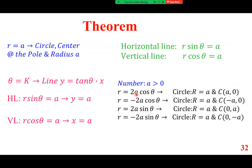If r equals 2a cosine theta, then it's a circle centered at a comma 0. If r equals 2a sine theta, the circle is along the y-axis. Cosine is along the x-axis, sine is along the y-axis — that's what those forms are all about.